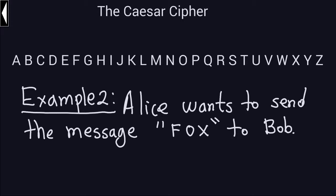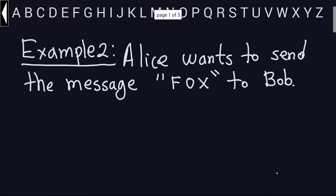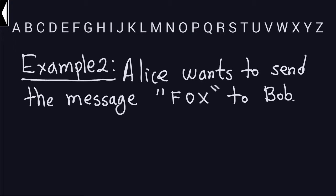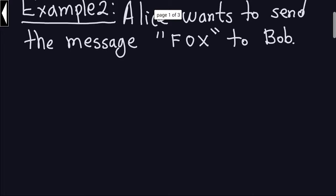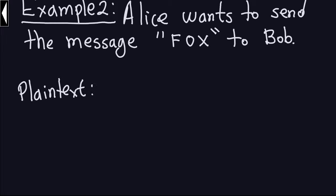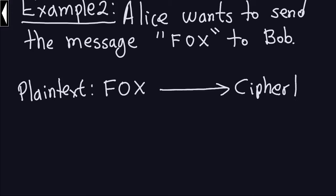This is the second example for the Caesar cipher. Alice wants to send the message 'Fox' to Bob. I'll go a bit faster here since you already have a feel for the mechanics. Alice plays her role by taking the plaintext — in this case 'Fox' — and transforming it into ciphertext so she can send it to Bob.